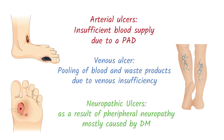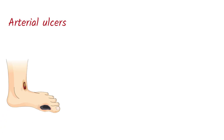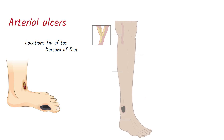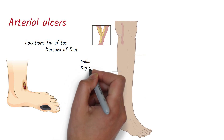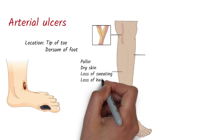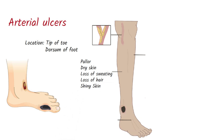There are several key features that can help distinguish arterial, venous, and neuropathic ulcers. Arterial ulcers are typically seen distally, at the tip of the toes or the dorsum of the foot. The skin changes are pallor, dry skin, loss of sweating, loss of hair, and shiny skin.